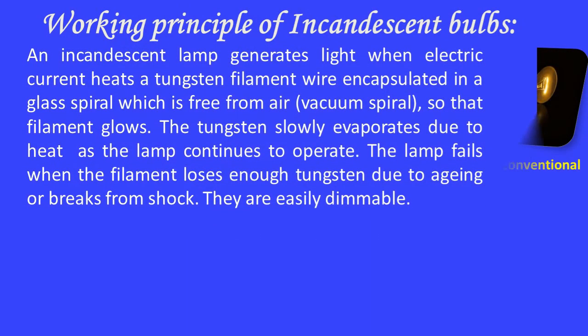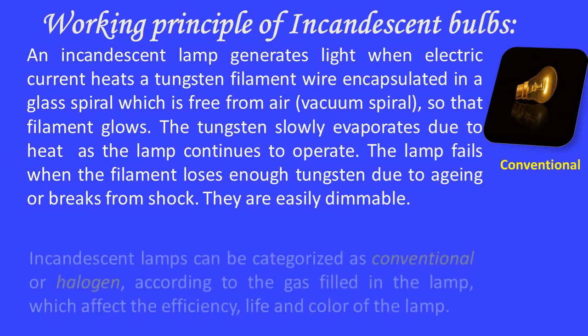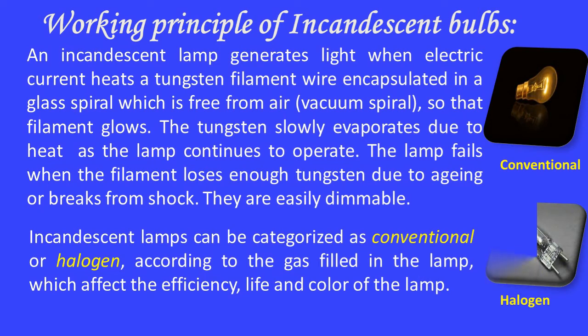An incandescent lamp generates light when electric current heats the tungsten filament wire encapsulated in a glass spiral, which is free from air — that is, a vacuum spiral — so that the filament glows. The tungsten slowly evaporates due to heat as the lamp continues to operate. The lamp fails when the filament loses enough tungsten due to aging or breaks from shock.